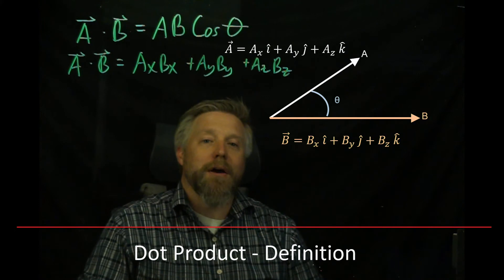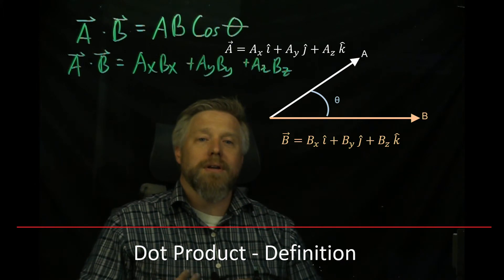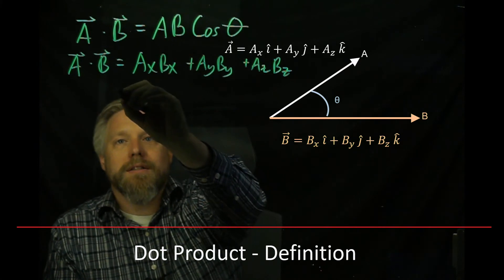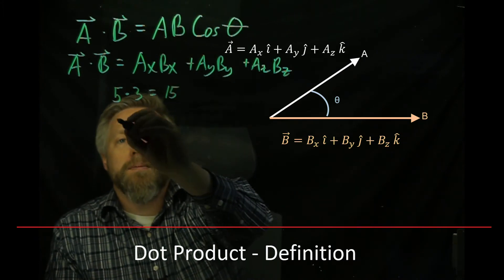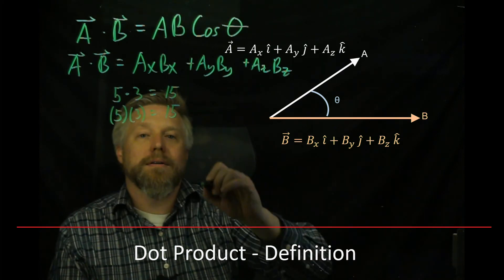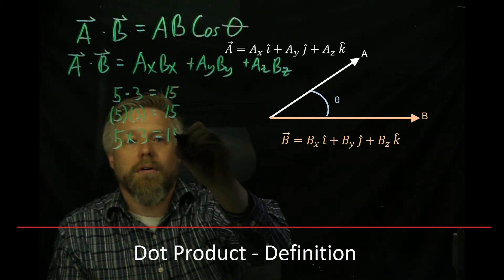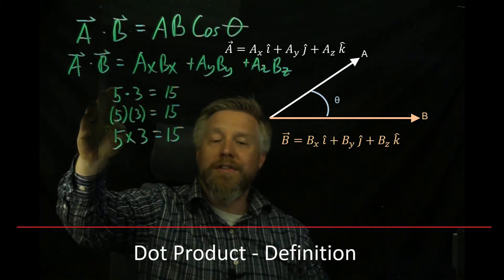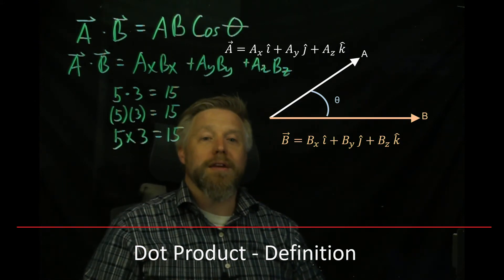I also want to talk briefly about notation. With scalar multiplication, you might use different symbols interchangeably — for example, 5 times 3 written with a dot, with parentheses, or with a cross. With scalars, all three are the same. With vectors, they are not the same, so it's very important to be careful with your notation.